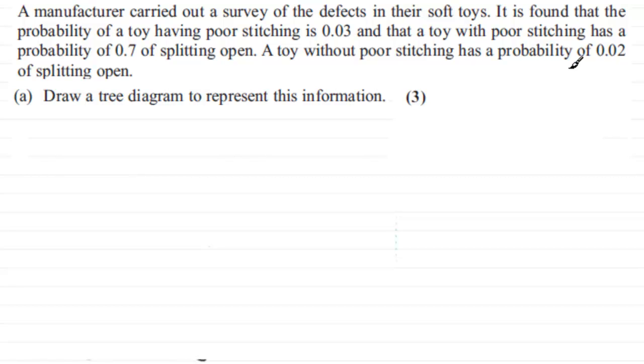Okay, welcome back if you had a go. So let's just read through the problem first of all. We've got a manufacturer carried out a survey of the defects in their soft toys, and it is found that the probability of a toy having poor stitching is 0.03, and that a toy with poor stitching has a probability of 0.7 of splitting open. A toy without poor stitching has a probability of 0.02 of splitting open. So how do we go about drawing a tree diagram to represent this information?